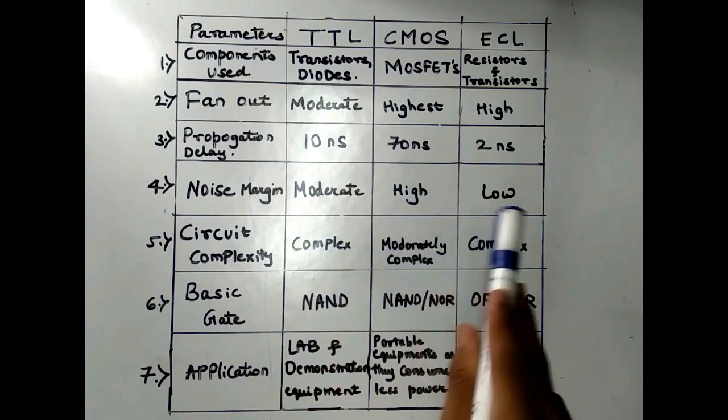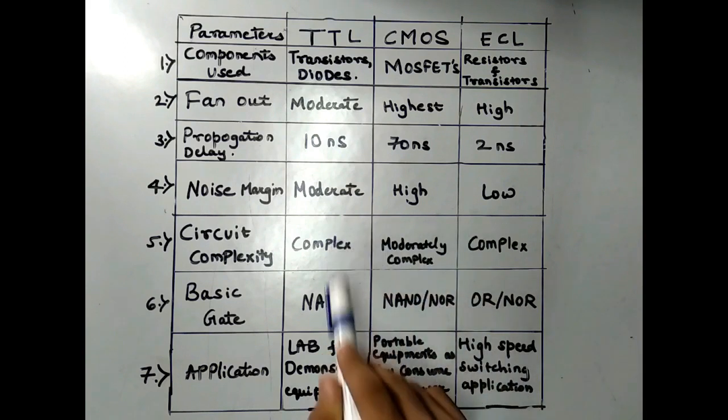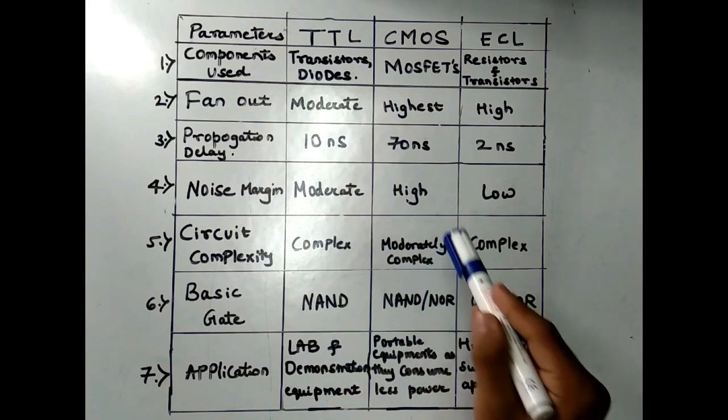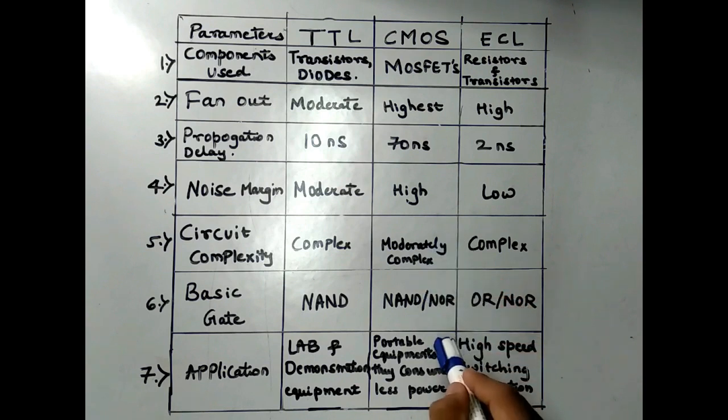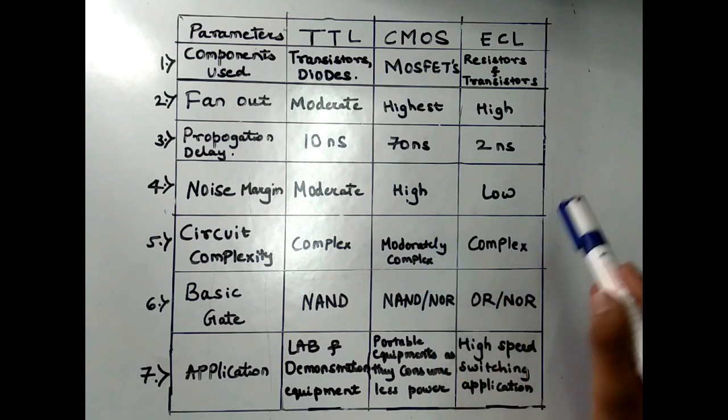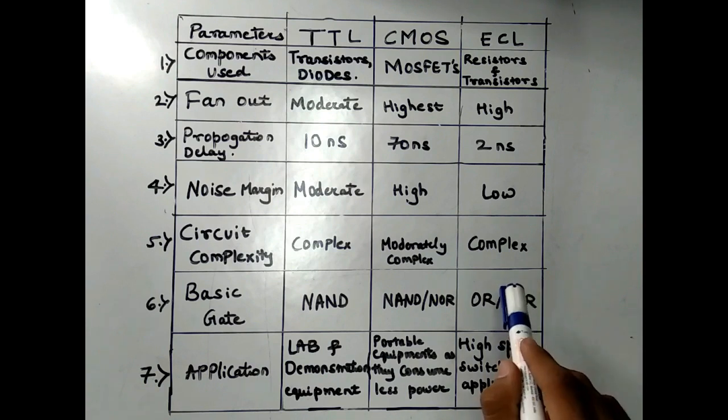Application of TTL, CMOS and ECL: TTL are used in lab and demonstration equipment, CMOS are used for portable equipment as they consume less power, and ECL are used for high speed switching applications.